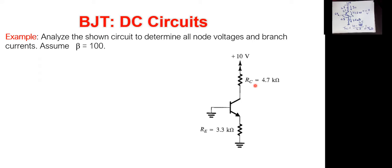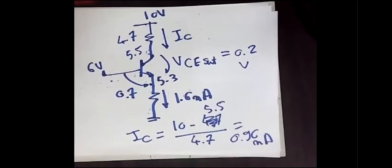We have now completed the DC analysis for the BJT. In the next part — next week — which will be the final part of this module, we are going to investigate what is called the AC analysis for the BJT, using small signal modeling, similar to what we did with the MOSFET. Thank you very much for your concentration, and see you next week with part two: the AC analysis of the BJT.